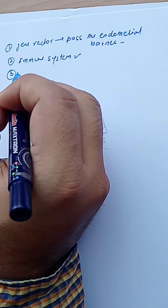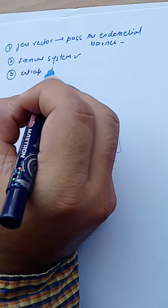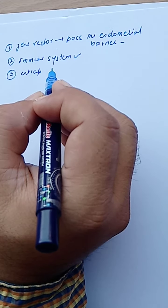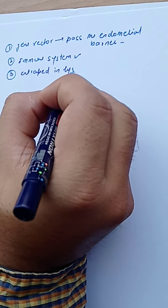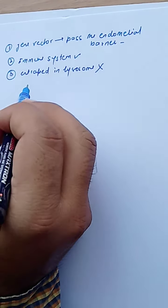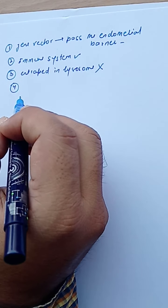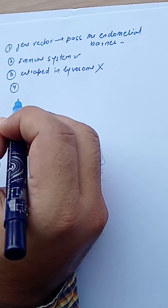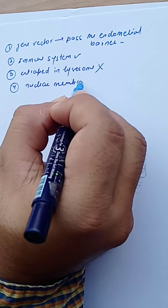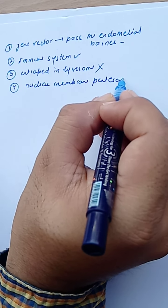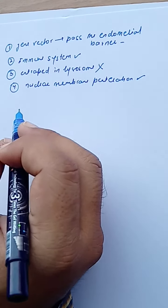Another challenge is that the vector should not be entrapped in lysosomes, where lysosomal enzymes would degrade it. If it is trapped, it will not deliver the gene of interest. Additionally, the gene vector must be able to penetrate the nuclear membrane. These are the key requirements for successful gene transfer.